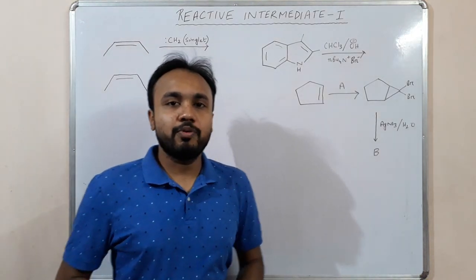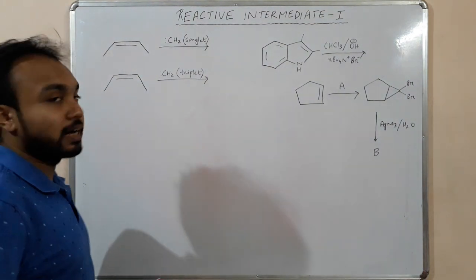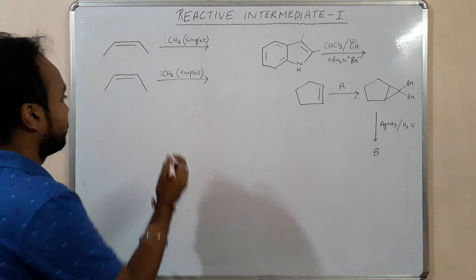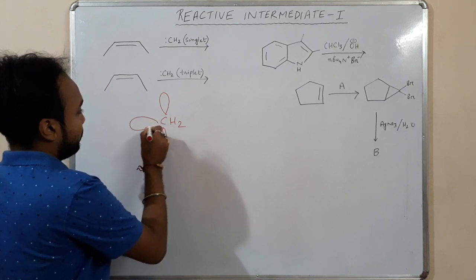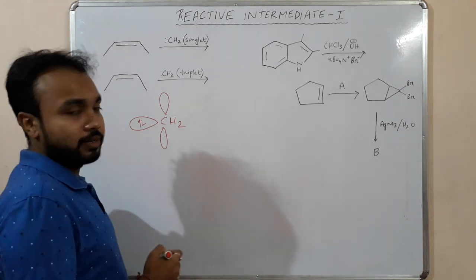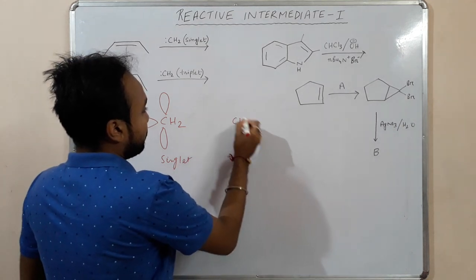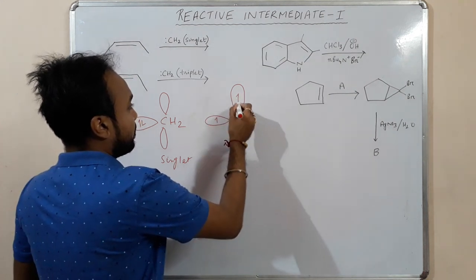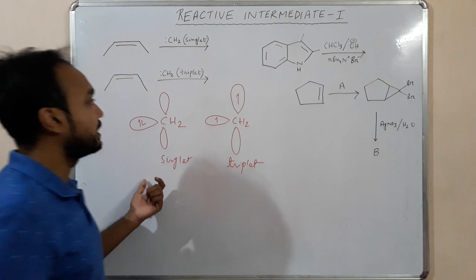Good morning friends, today I am going to discuss reactive intermediates. First, carbene — there are two types: singlet carbine and triplet carbine. In singlet carbine, both electrons lie in the same orbital. For triplet carbine, the electrons are not paired; they lie in different orbitals. This is the major difference between singlet and triplet carbine.